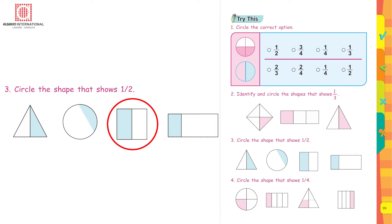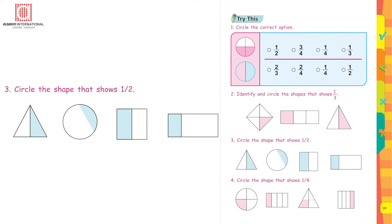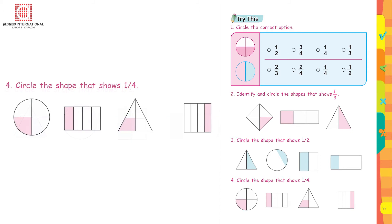The fourth picture is divided into two parts but the parts are not equal, so cross it out. The triangle and the square are the shapes that show one upon two. Now similarly do question number four.